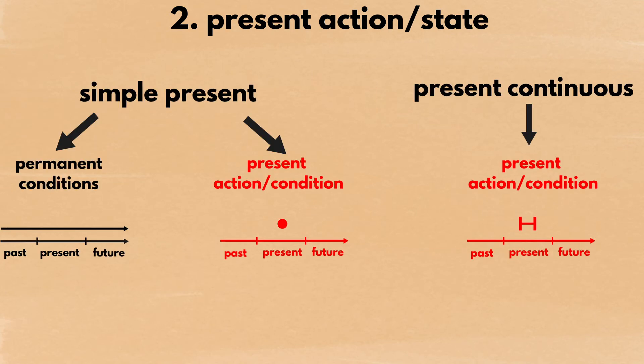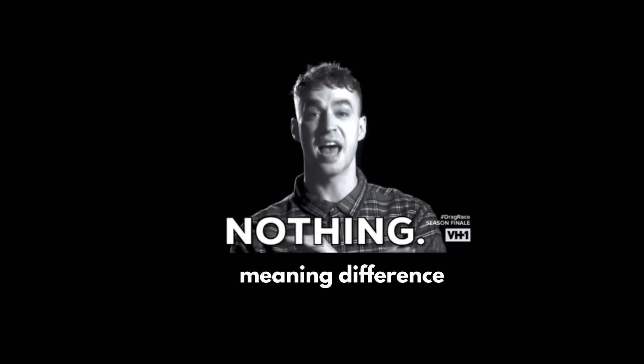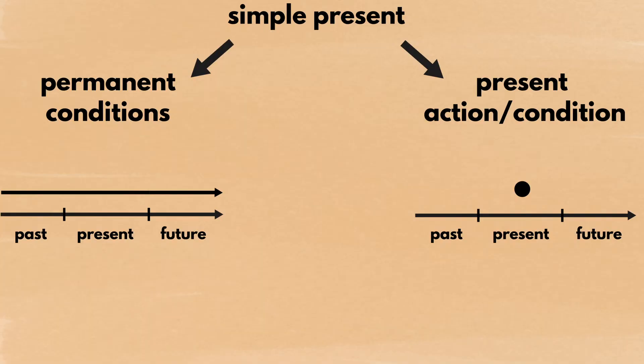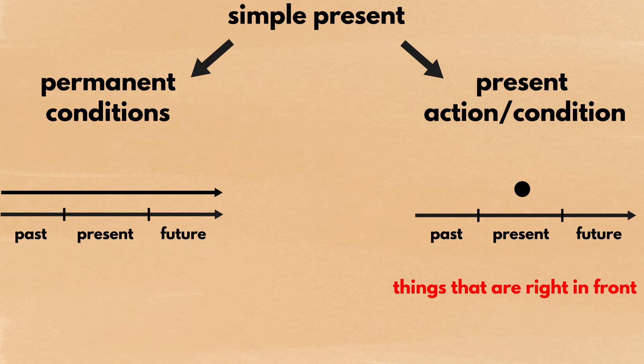The second meaning of the simple present tense refers to an action or state that is happening right now. As mentioned earlier, the present continuous tense also has the same meaning, so many people wonder how English speakers choose between the two. In terms of meaning, there isn't much of a difference. Surprisingly, the largest factor that decides which form is used is the dual meaning of the simple present. Since it can also refer to permanent conditions, native speakers tend to use the simple present for things right in front of the speaker and listener to avoid misunderstanding.